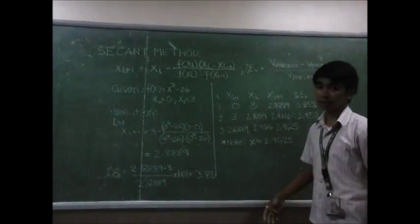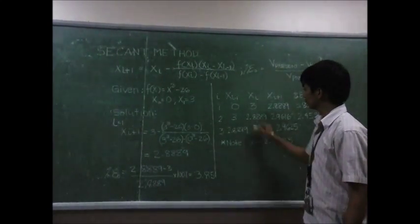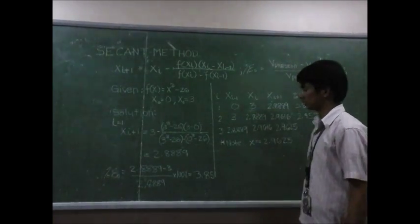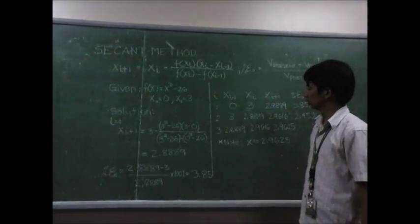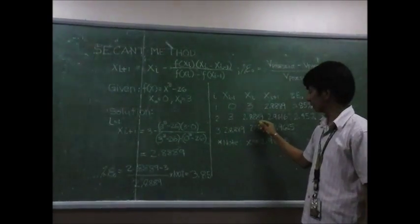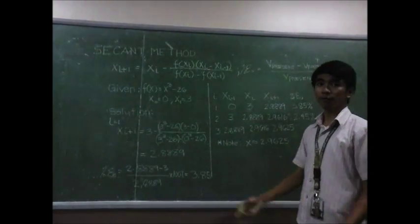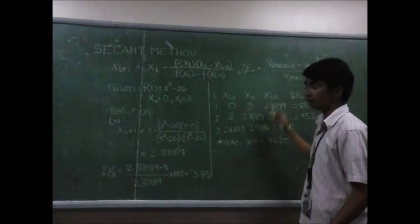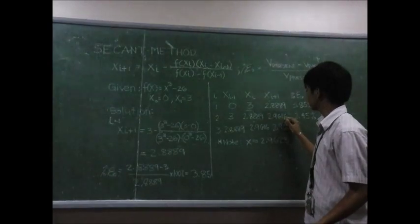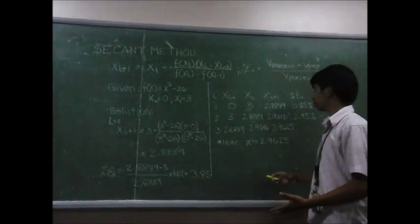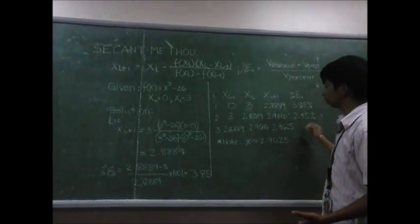For our second iteration, we use the previous values of x for x_{i-1} and x_i, which are 3 and 2.8889. Using the same formula for x_{i+1}, the obtained value is 2.9616, and the approximated error is 2.45%.